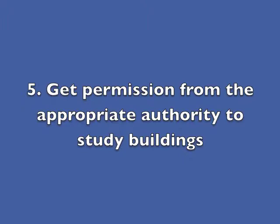Number five: get permission from the appropriate authority to study buildings. At Augustana, I contacted both our facilities department and campus security about the type of project this was and how field workers would conduct their work. I emphasized that workers would be thoroughly trained and would respect the privacy of any building occupants. We also included one privately owned building, for which I sent a letter to the building owner explaining the research. The owner granted us permission to walk around their building and look for carcasses. I have a permission request letter on the website that you can use to send permission requests to private building owners.